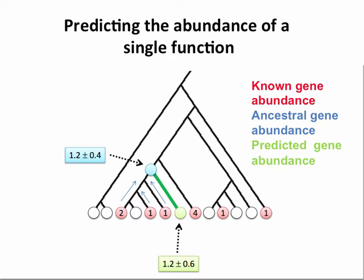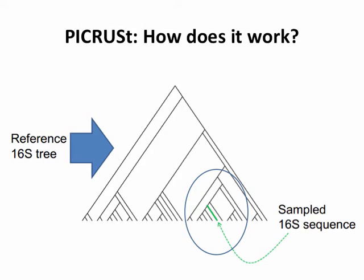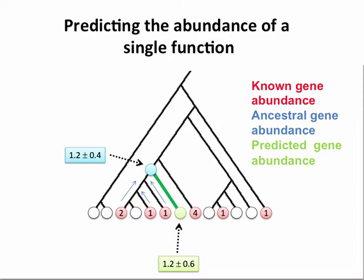We zoom in on a section of the tree. In the simplest case, if we had the genome for a tip that's 100% identical to our sequence, we might guess we know that genome has a particular ortholog or function. If we didn't have that genome but had a nearby genome, well, that's pretty close — there's a little bit of distance but we could use the nearest neighbor as a proxy. PICRUSt uses that idea and extends it further.